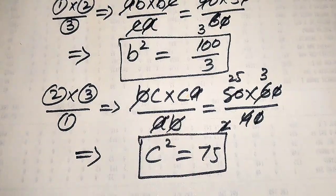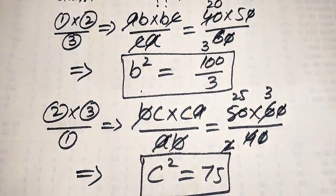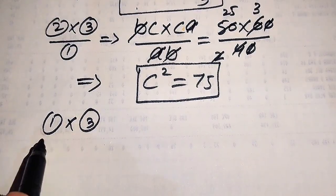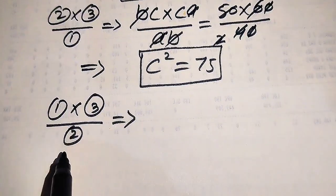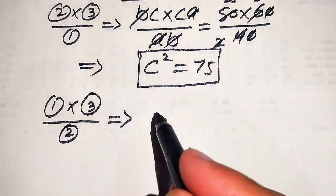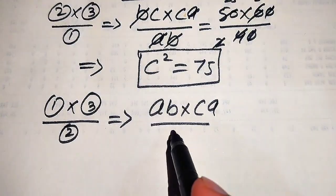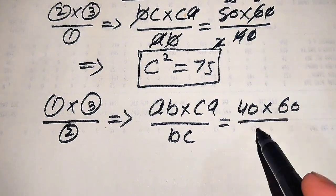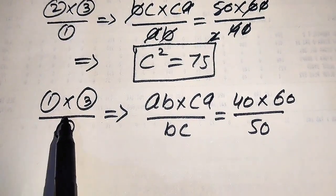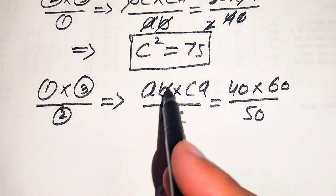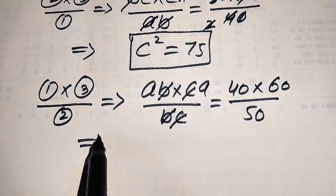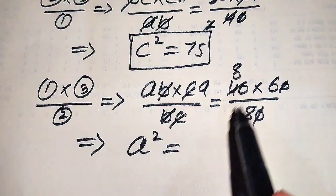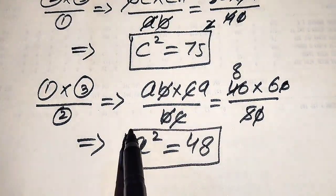Now we find the value of A square. We multiply equation number 1 with equation number 3, divided by equation number 2. The left-hand side is AB multiplied by CA divided by BC, equals 40 multiplied by 60 divided by 50. B cancels with B and C cancels with C, leaving A times A equals A square. This gives us 48, which is the value of A square.